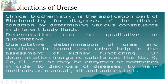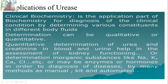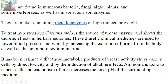The next enzyme is urease. In clinical biochemistry, urease is applied as a diagnostic for clinical conditions by determining various constants of different body fluids. The determination can be qualitative or quantitative. Quantitative determination of urea and creatinine in blood and urine helps in assessing kidney functioning, or determining inorganic substances like sodium, potassium, calcium, and chloride, or enzymes and hormones, to diagnose disease. Urease is found in numerous bacteria, fungi, algae, plants, and soils as a soil enzyme.